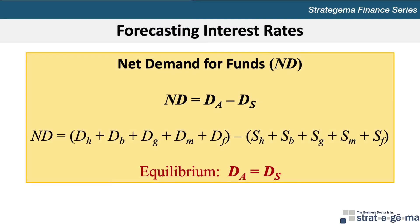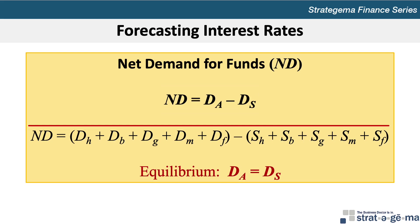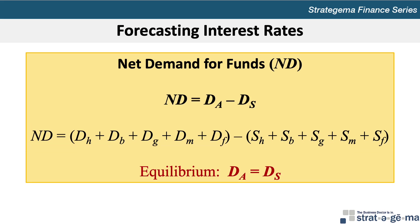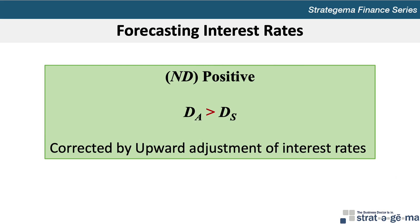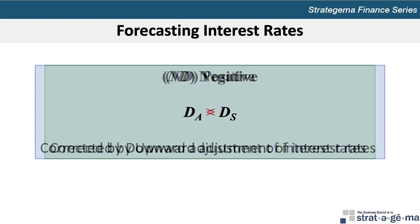In order to forecast future interest rates, we have to be able to forecast the net demand for funds, or ND, where ND equals the aggregate demand, DA, minus the aggregate supply, SA, each of which is comprised of their individual constituent components relating to households, businesses, federal and municipal governments, and foreign countries. If the forecasted level of ND is positive or negative, a disequilibrium will exist. If ND is positive, the disequilibrium will be corrected by an upward adjustment in interest rates; if ND is negative, it will be corrected by a downward adjustment. The larger the forecasted magnitude of the net demand for funds, ND, the larger the adjustment in interest rates will be.